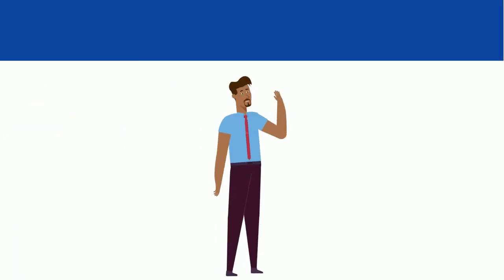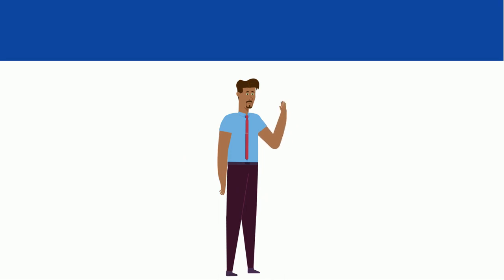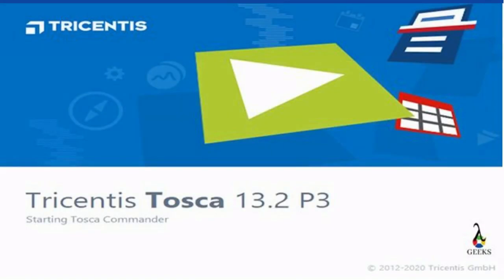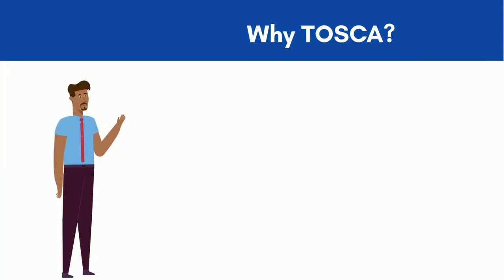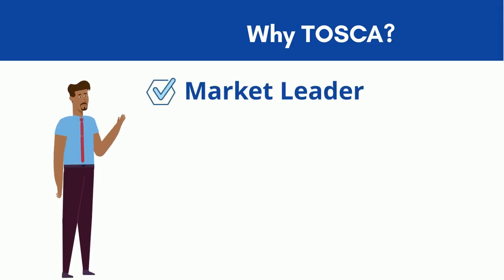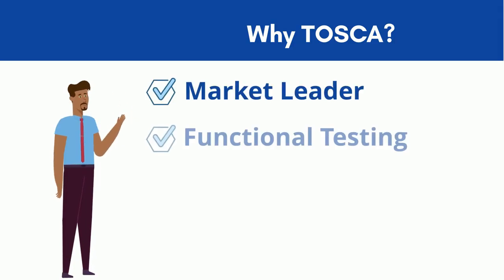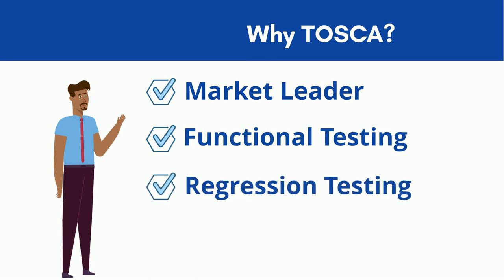There are lots of automation tools available in the market, but why are we talking about Tosca? Let's understand the reasons behind this. Tosca is one of the market-leading tools in the present day. It has the ability to perform functional and regression testing as well. API testing can also be done through Tosca, which has an important role in the agile process.